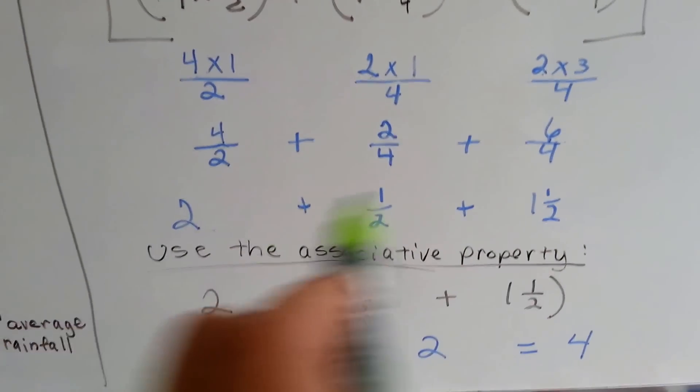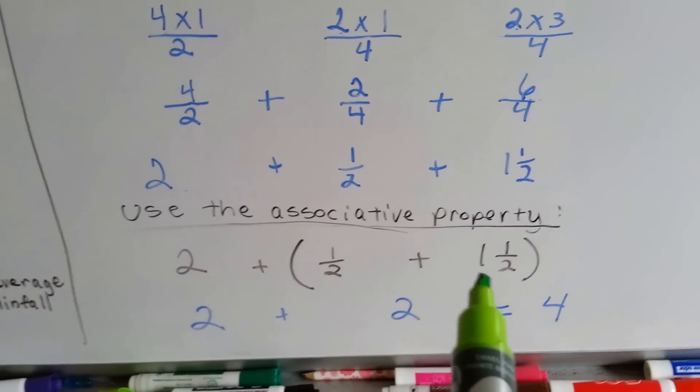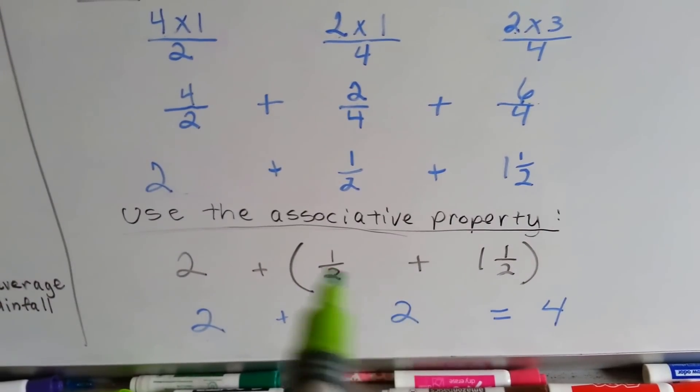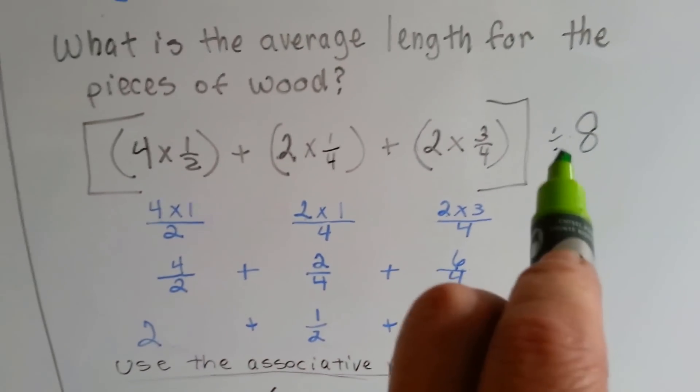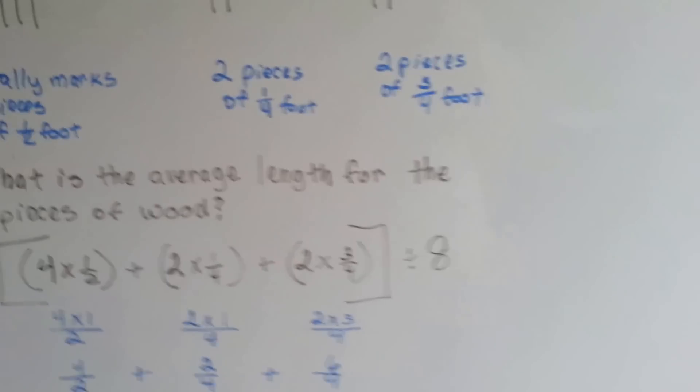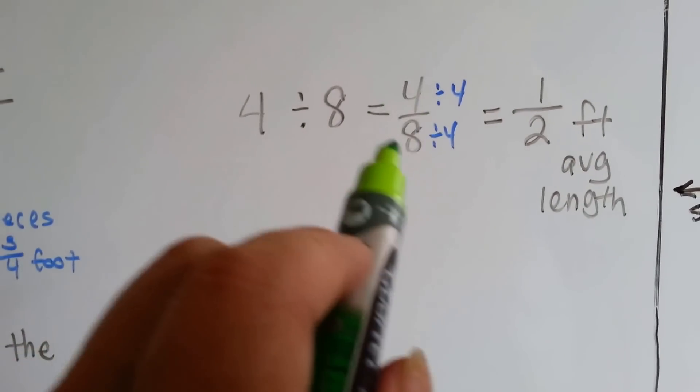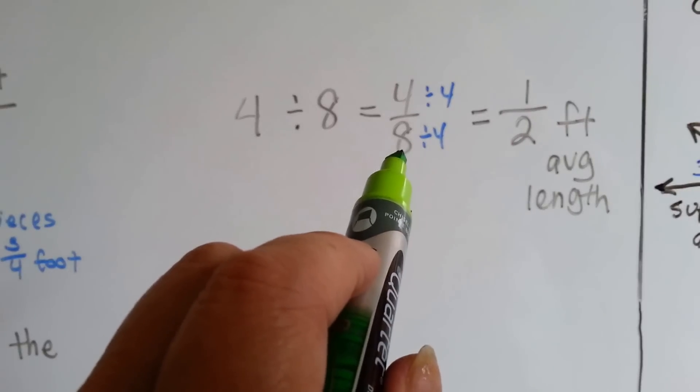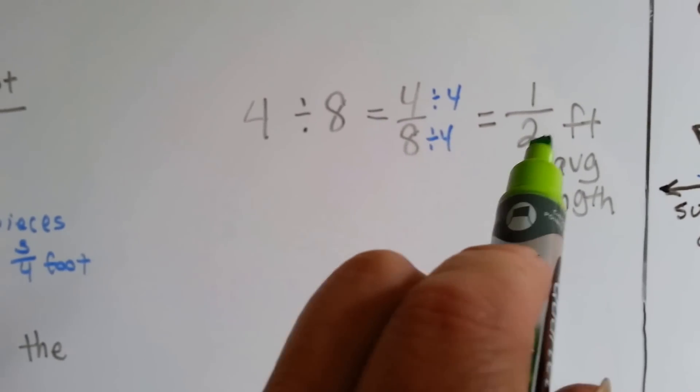Now we need to add these together, and we can use the associative property to do it. The half plus the one and a half makes two. We have to add the two, we get four. Now we need to divide it by eight. Four divided by eight. To divide four by eight, we just put four over eight. Then we need to simplify it. Four divided by four is one. Eight divided by four is two.